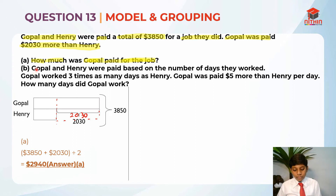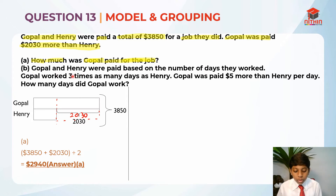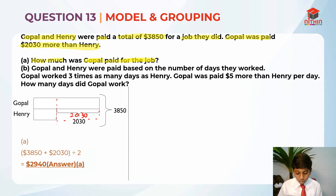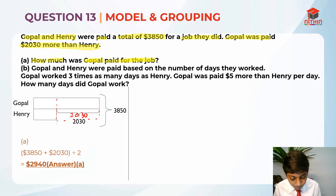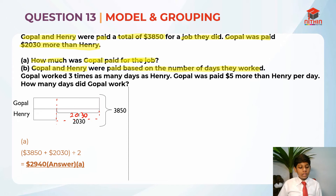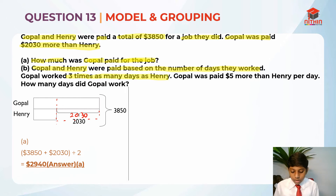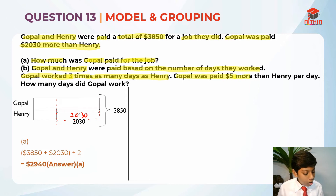Now let's read Part B. Gopal and Henry were paid based on the number of days they worked. Gopal worked three times as many days as Henry. Gopal was paid $5 more than Henry per day. How many days did Gopal work? Since Gopal was working three times as much as Henry, they were paid based on the number of days worked, and that is why Gopal got more money each day.